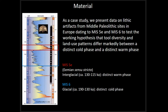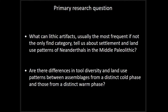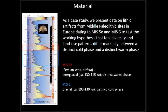To address these questions, we started a case study presenting data on lithic artifacts from Middle Paleolithic sites in Europe dating to MIS-5E and MIS-6, to test the working hypothesis that the diversity of land use patterns differs markedly between a distinct cold phase and a distinct warm phase. MIS-5E is the Eemian sensu stricto — the last interglacial — lasting from about 130,000 to 150,000 years BP, while MIS-6 is a very harsh glacial, a distinct cold phase lasting from about 190,000 to 130,000 BP.